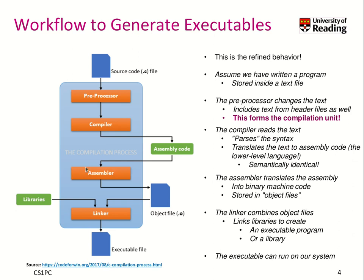The assembler generates an object file, and the object file is then combined by the linker with libraries and multiple object files into our executable — or into a library if you want to create one. When the preprocessor runs on a C file, it generates something called a compilation unit.